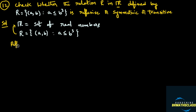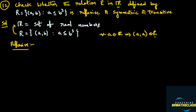Reflexive property: for any A which is a real number, if the ordered pair (A, A) is in the relation, then we say the relation is reflexive. I know this relation is not reflexive, so I will try to give a counter-example.